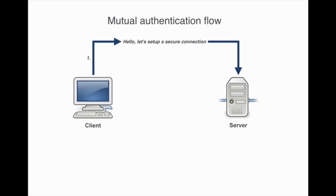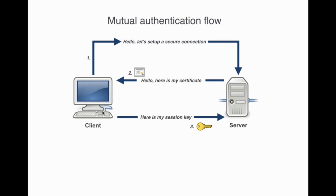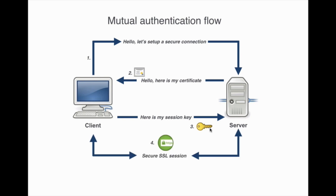The typical flow of configuring a secure connection looks like this. You first ask if the server supports secure connections, next you receive its certificate and validate it on the client side. After, if everything is ok, you send a session key which will be used to encrypt your connection, and you establish a secure TLS session.